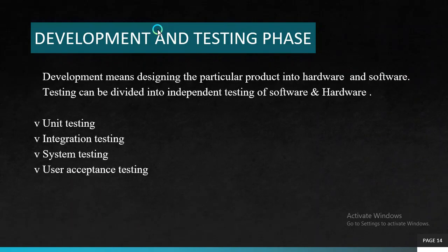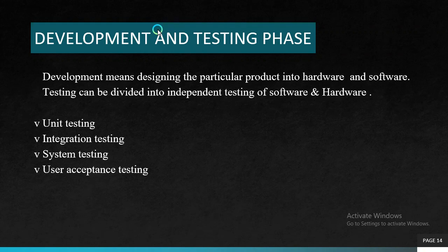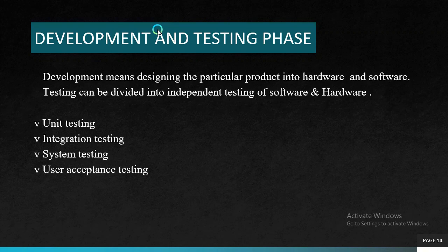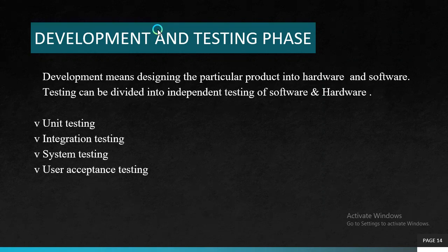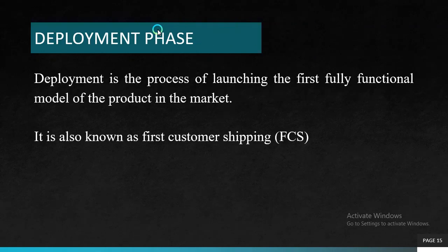The next phase is the development and testing phase. Development phase transforms the design into a realizable product. The detailed specifications generated during the design phase are translated into hardware and firmware. During this phase, installation and setting up of various development tools is performed, and the product hardware and firmware are developed using different tools and associated production setup. Testing can be divided into independent testing of software and hardware — unit testing, integration testing, system testing — and user acceptance testing.